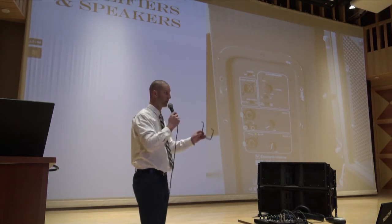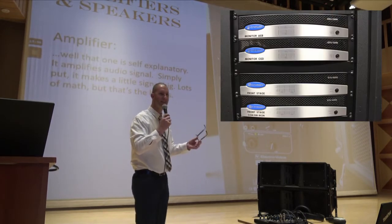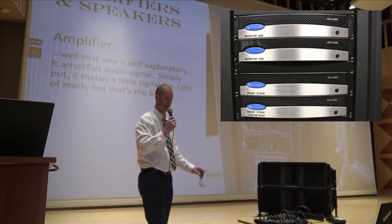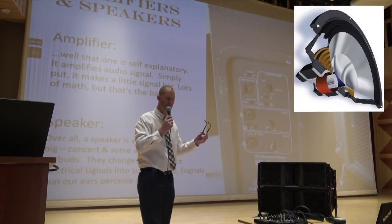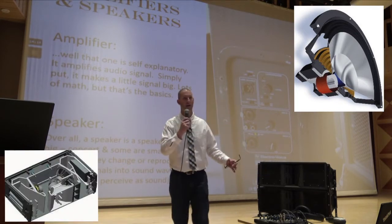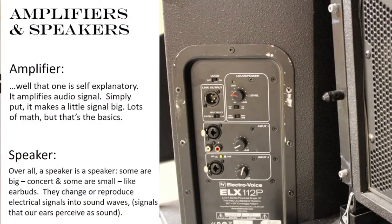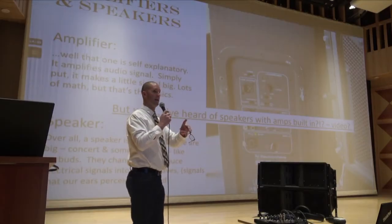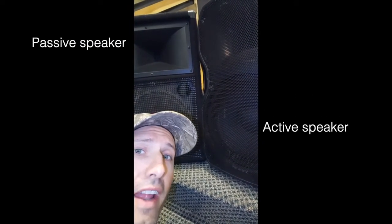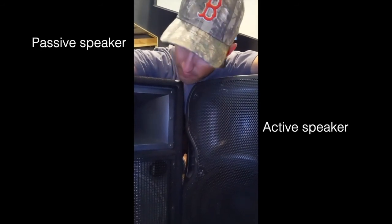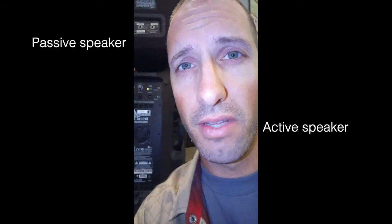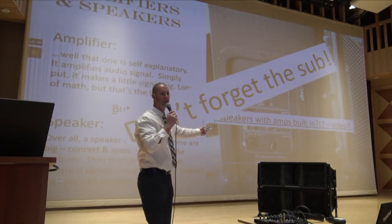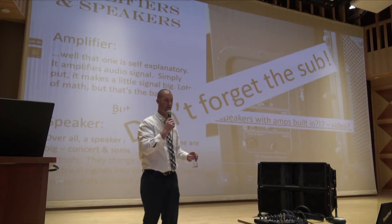Amplifiers and speakers — this is where people usually get excited. An amplifier basically takes a little signal and makes it big. They're usually super heavy because they have a lot of components. A speaker takes an electrical signal and turns it into a sound wave. The sound waves are air molecules that pulse back and forth, and our ear interprets those into sounds. Active speaker has an amp built in; the passive speaker doesn't. There are also subwoofers, which are built to produce the low-end frequency spectrum, usually about 100 Hz or below.